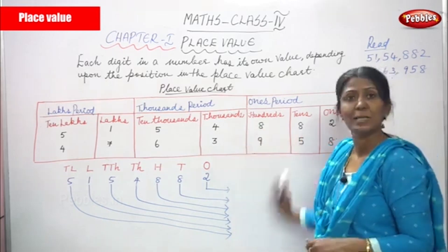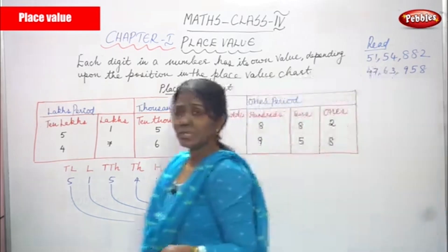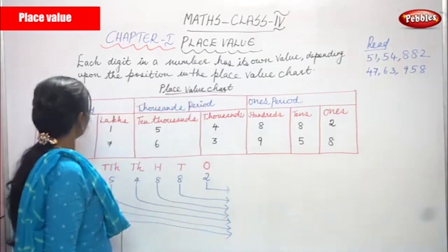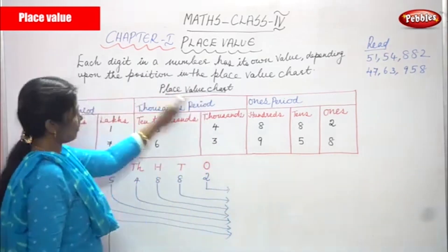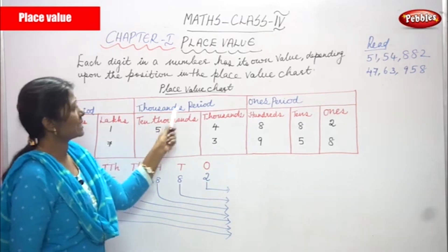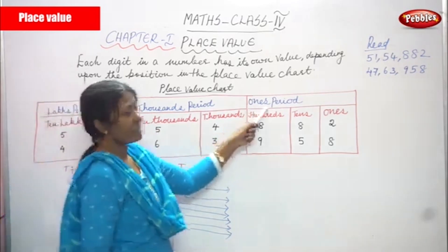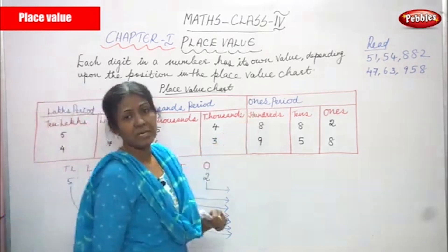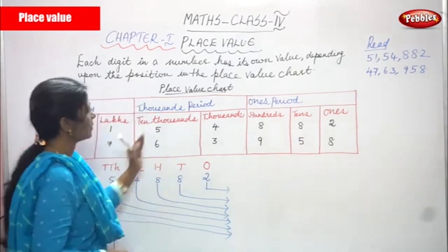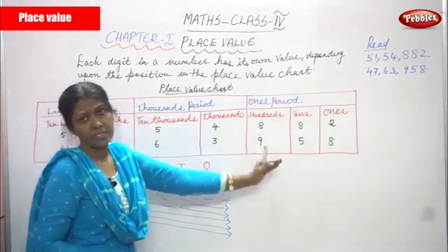What are the positions of the numbers? This is a place value chart. This is the lakhs period, this is the thousands period, and the other is the ones period. There are three periods: lakhs period, thousands period, and ones period.